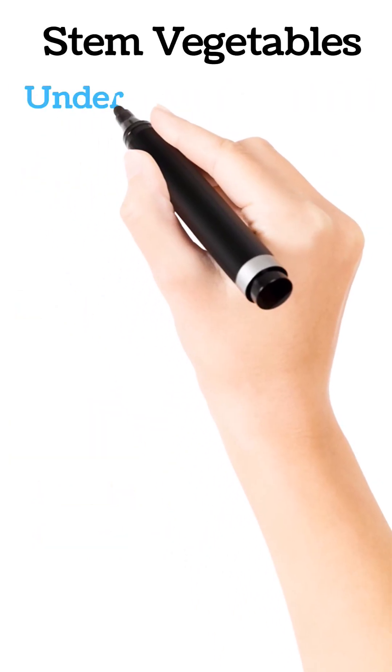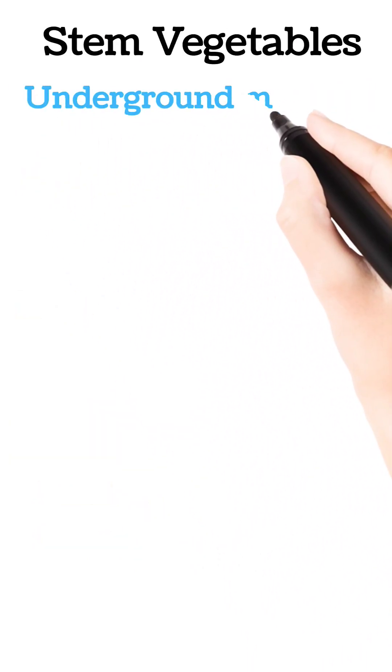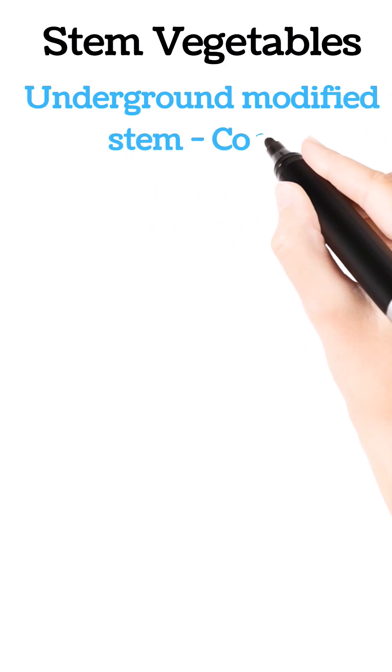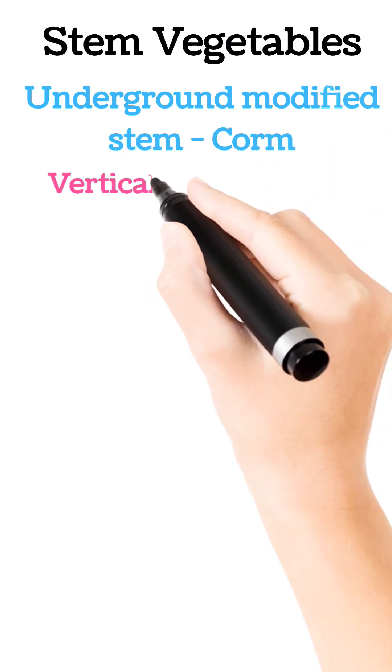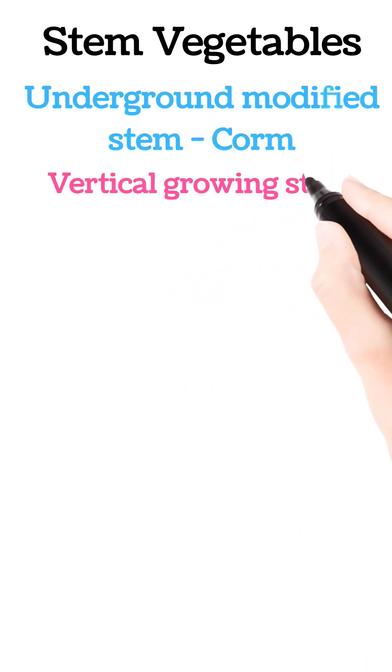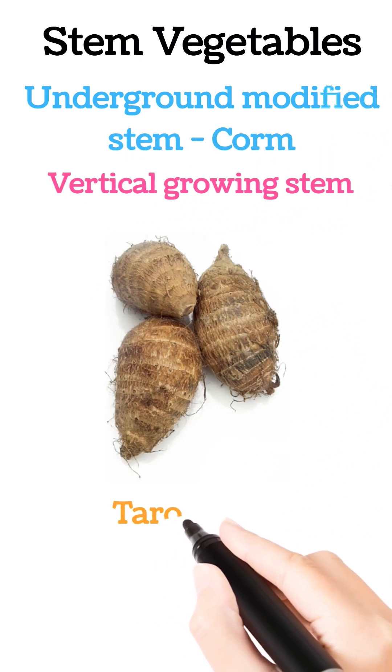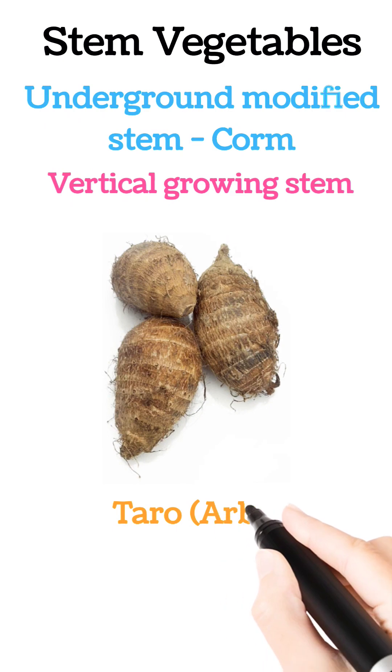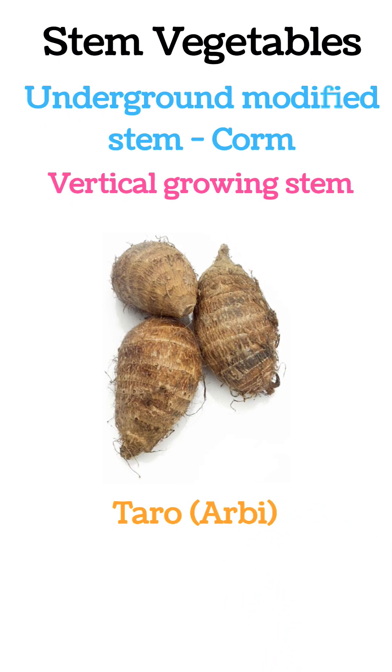The fourth type of underground modified stem is corm. Corms grow vertically in the soil, like taro or arbi.